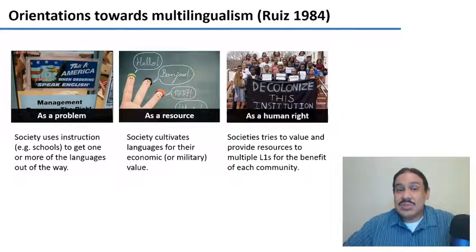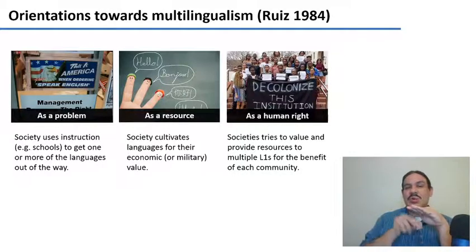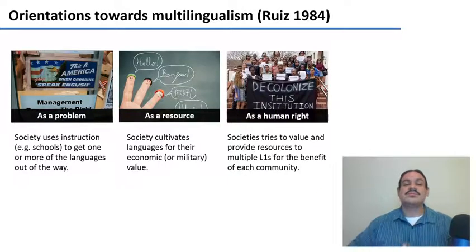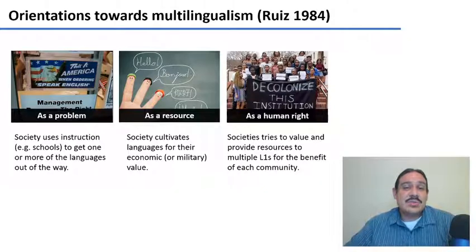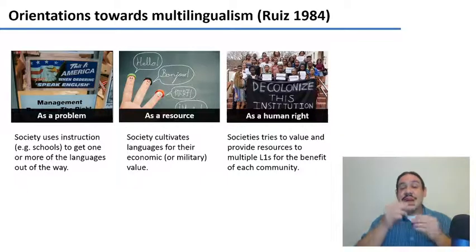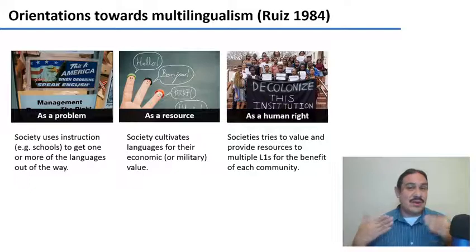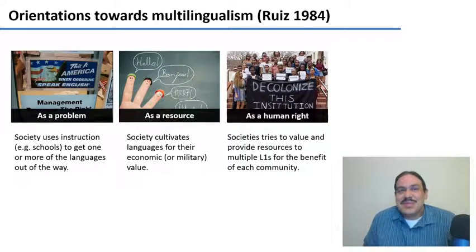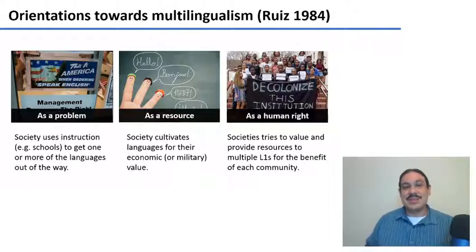Multilingualism can also be seen as a resource, where society can cultivate more than one language because it has economic value — for example, if everyone speaks English, there'll be opportunities for exchange with other people in the world. And societies can also choose to view multilingualism as a human right, trying to value each language and help communities maintain their usage. Everyone should have the right to say 'I love you' to their mother in whichever language they choose.